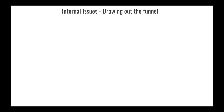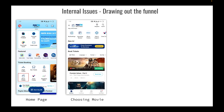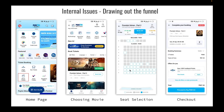For internal issues, let's understand the user funnel — how the user goes through the app from beginning to end. The user lands on the home page, chooses the movie icon, goes to the movie page, selects which movie to watch, chooses seats, and finally checks out. We'll find what possible reasons at each stage could have caused the drop in bookings.